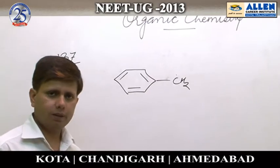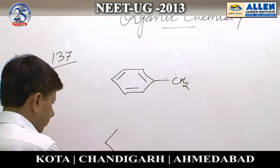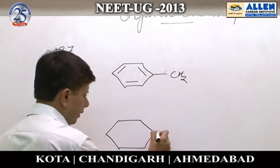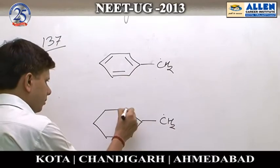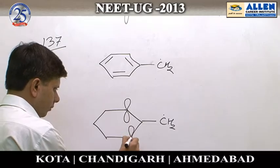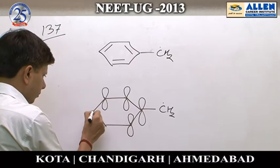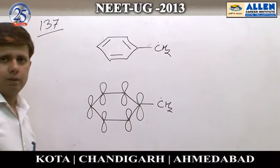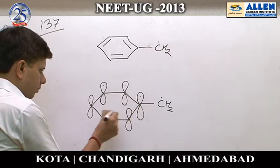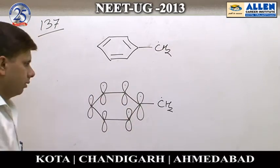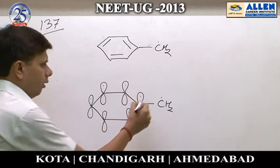Now, it is aromatic. As we know, according to Hückel's rule, the benzene ring present in benzoyl free radical has 6 pi electrons, each present in these 6 p orbitals.